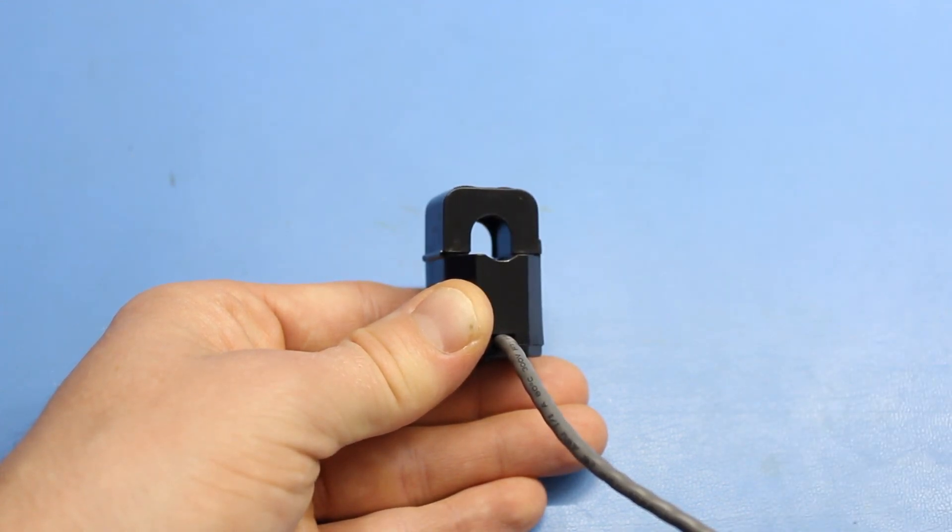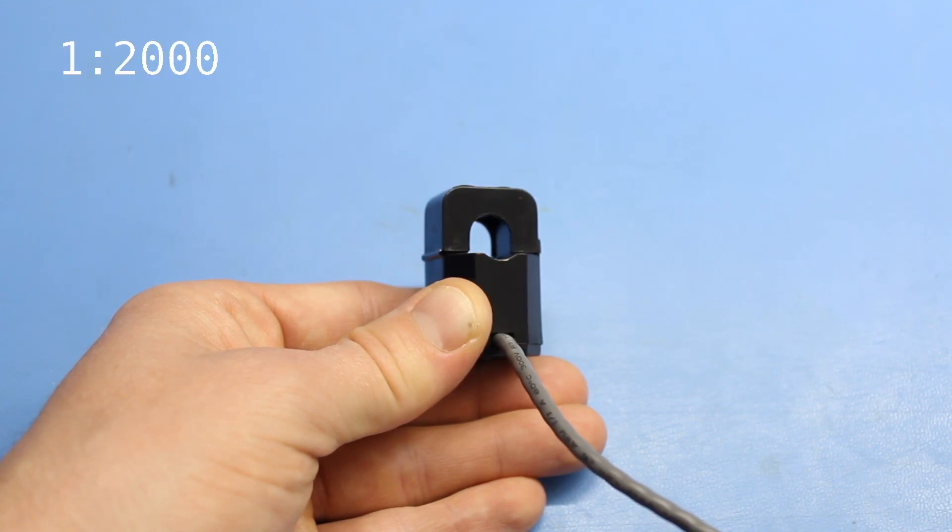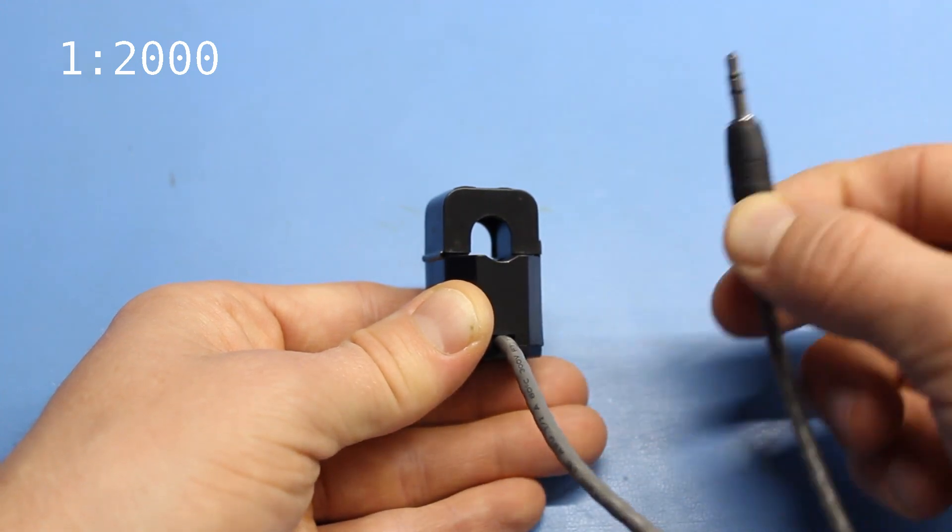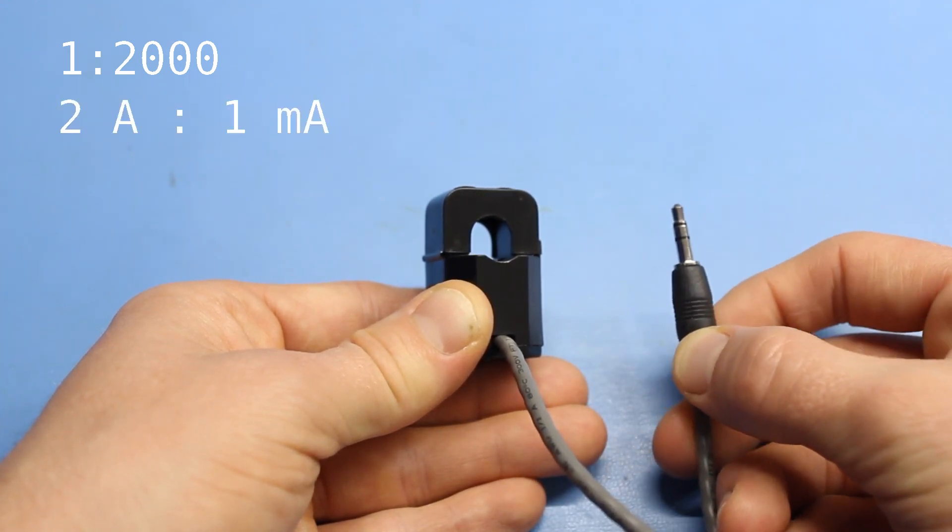This particular model can be found for about $10 and has 2,000 secondary windings. This means that as 2 amps flow through the core, 1 milliamp is induced on the output.